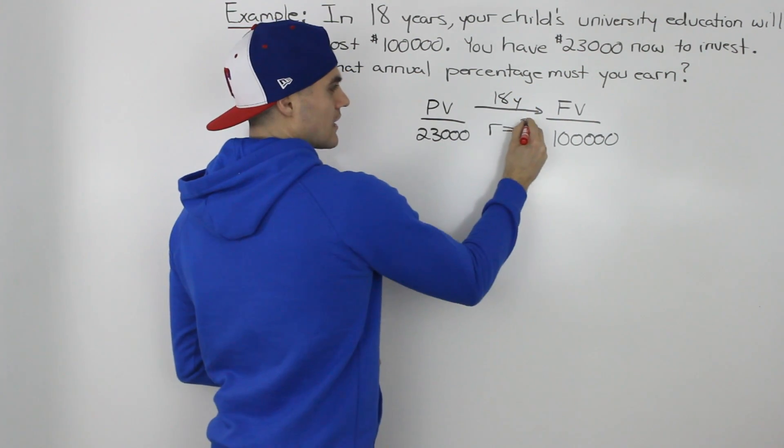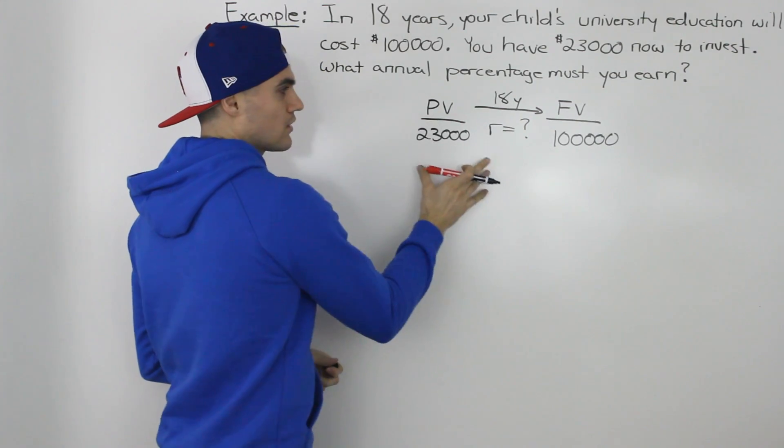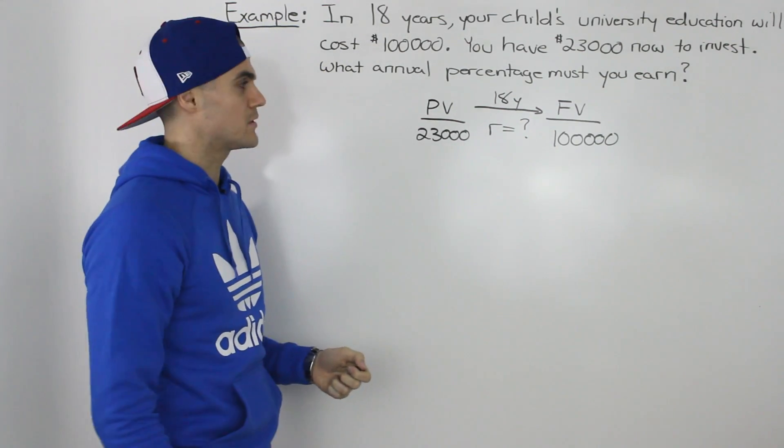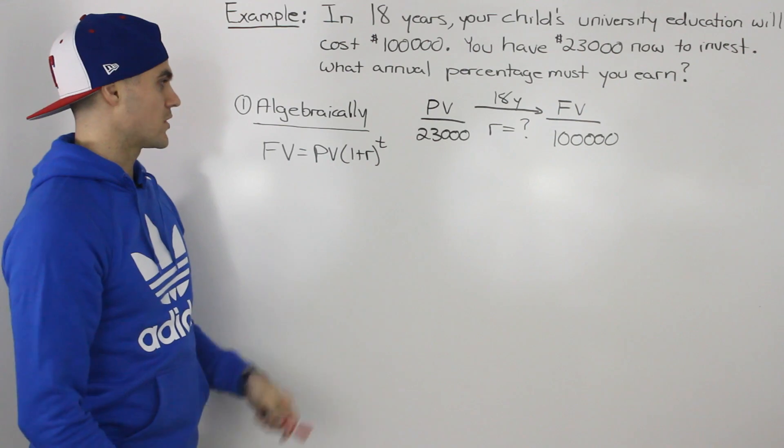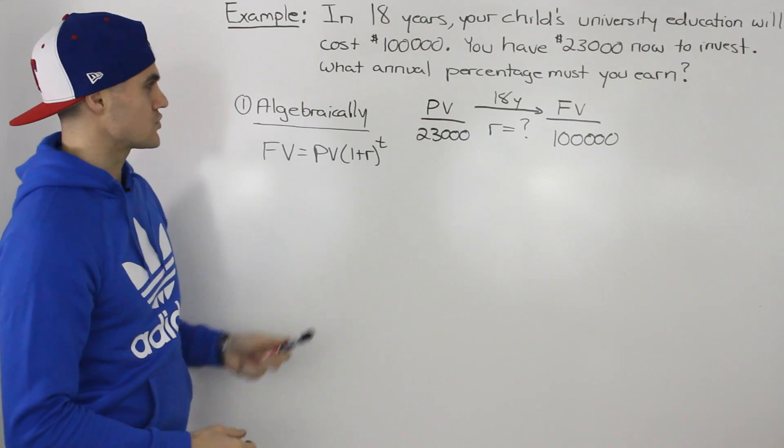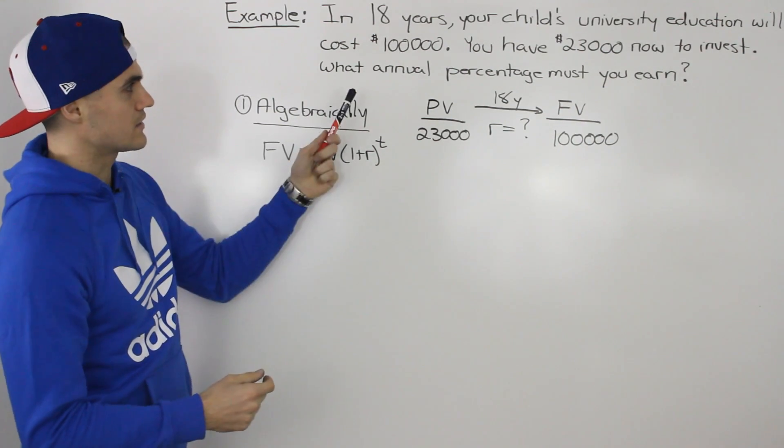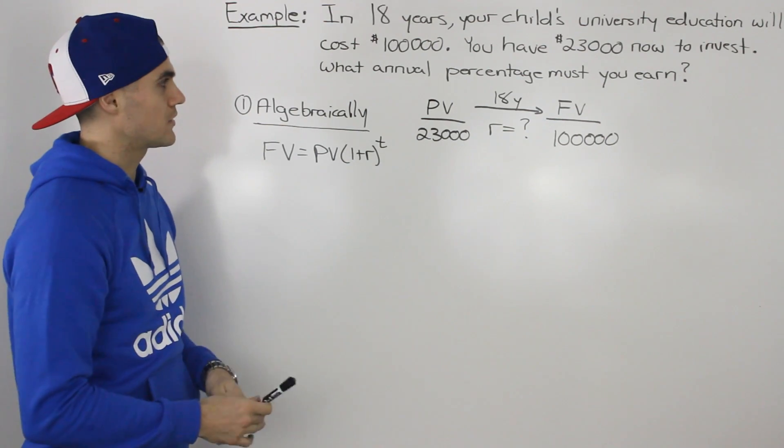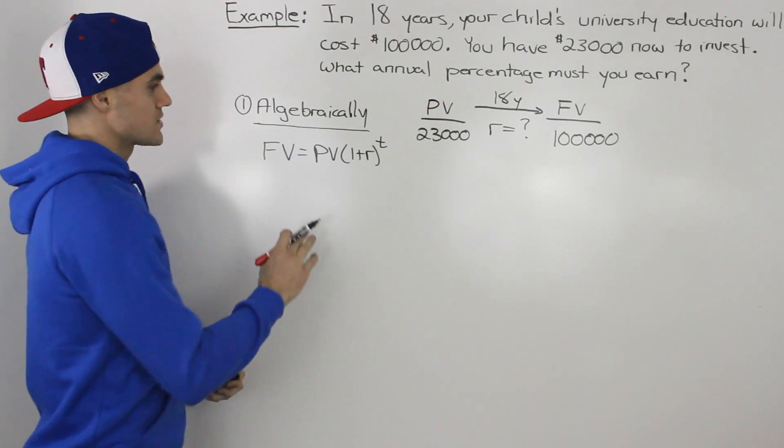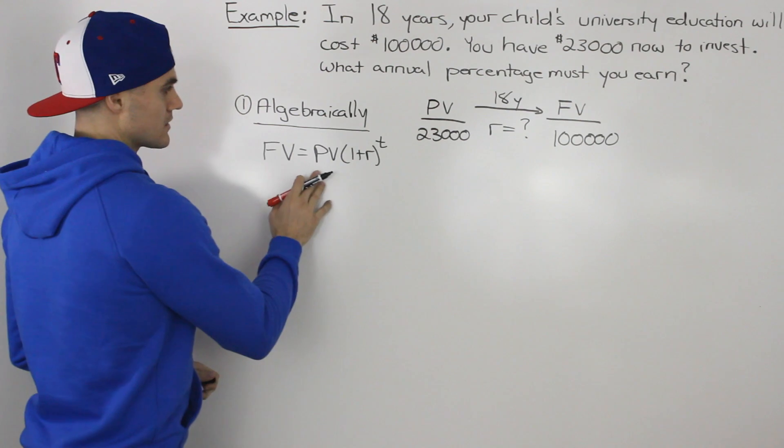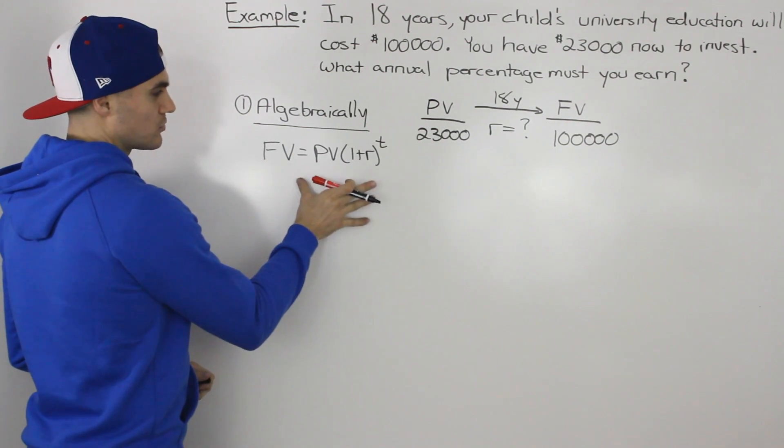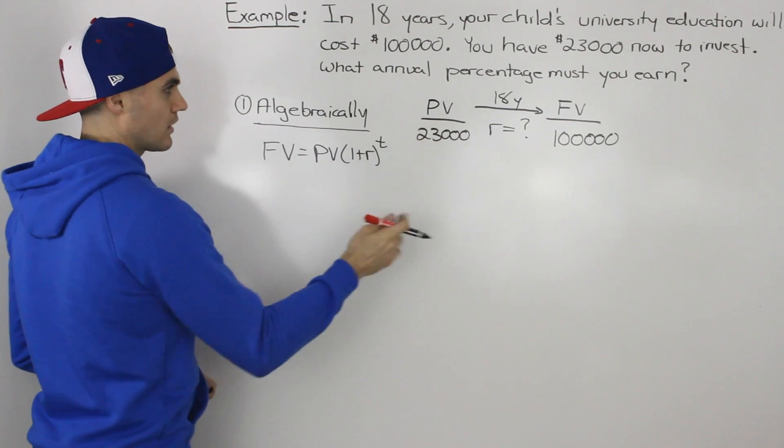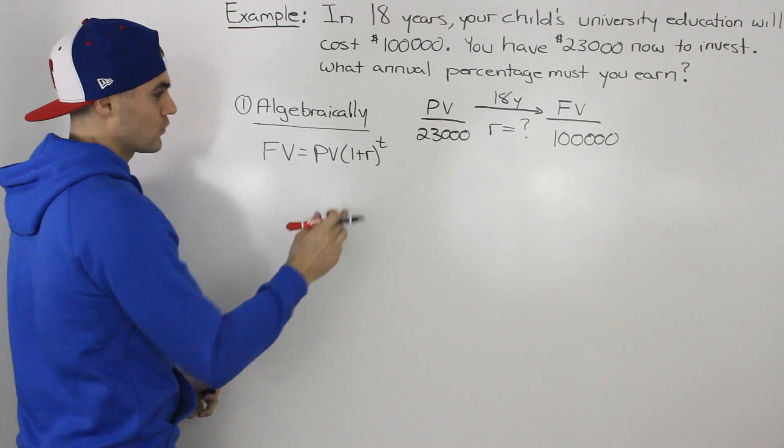So what annual percentage do we have to earn in order for that to happen? The first way, let's solve it algebraically using the compound interest formula. Since nothing is mentioned, we assume compound interest. Instead of isolating for the variable first, let's just plug everything in and then solve for R.